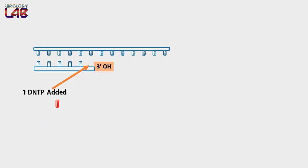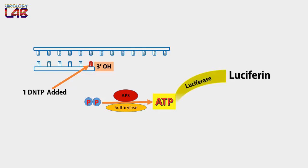After adding one nucleotide, pyrophosphate is released, which is converted to ATP in the presence of enzyme sulfurylase and APS. This ATP then emits a light signal by the action of enzyme luciferase. This light signal can be detected by a sensor device.